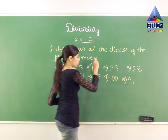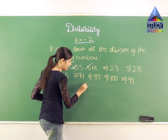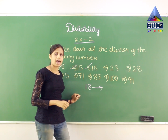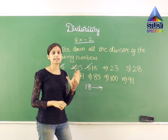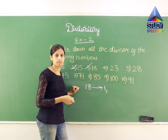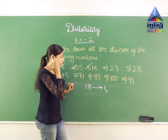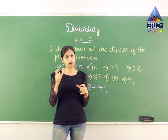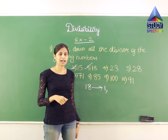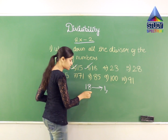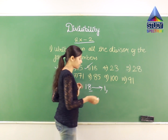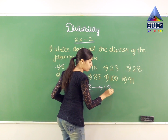Now let us start with the third question. In this question I have 18, and we have to find all the possible divisors for it. As I already told you, 1 is a divisor for all numbers, so for 18, 1 is one of the divisors. Now 2: for 2 to be a divisor, the number should have an even number at the end. The last digit of 18 is 8 — is it even? Yes, 8 is even. So 2 is a divisor for 18.